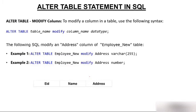The example modifies the address column of the employee_new table. We use ALTER TABLE employee_new MODIFY address VARCHAR(255) — changing the size from 25 to 255. Alternatively, ALTER TABLE employee_new MODIFY address NUMBER changes the data type. So by using MODIFY you can increase the size or change the data type.